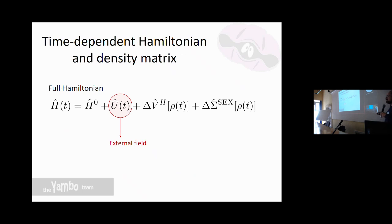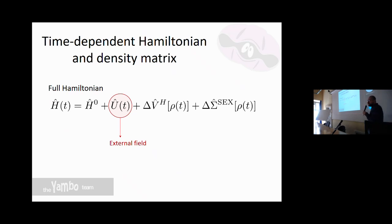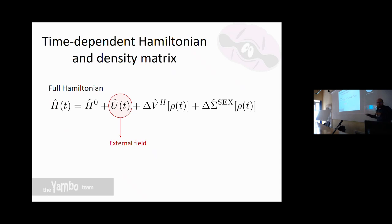Now we do something else with this Hamiltonian: we add an external electric field. This is the core of the approach. We want to evaluate the response of the system to this external field. Note that we also have a variation of the electron-electron interaction, because the external field changes the density, making it time-dependent, and these quantities are functionals of the density and so they will also change — and this will give us the excitons.